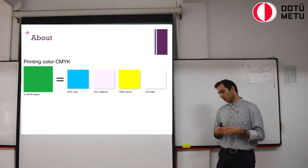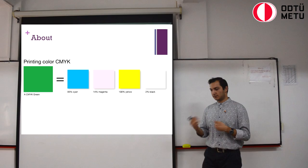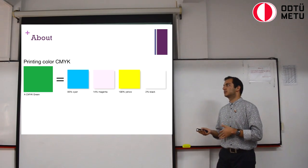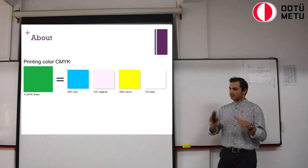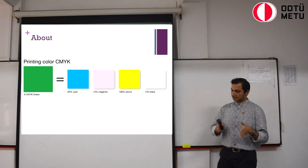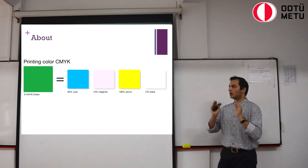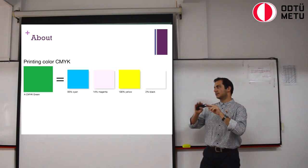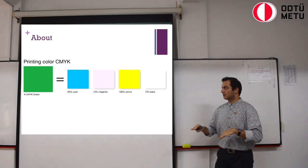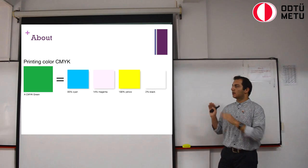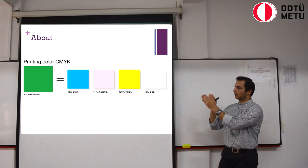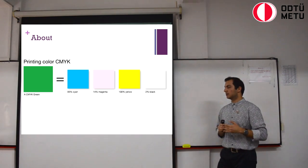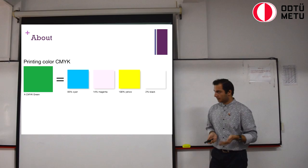Now I want to mention something about the CMYK system. What we get in the CMYK system is that we take a color and we basically dissect it into four percentages of Cyan, Magenta, Yellow, and Black.